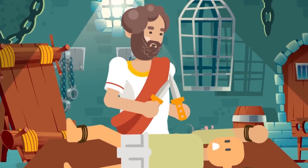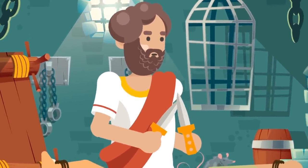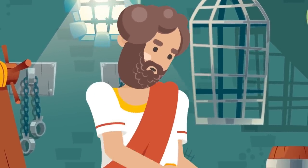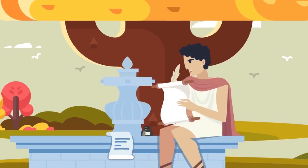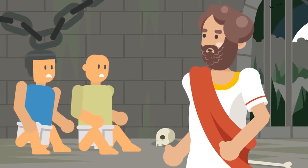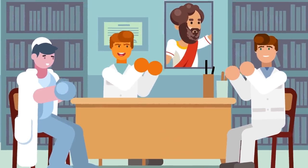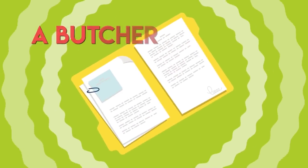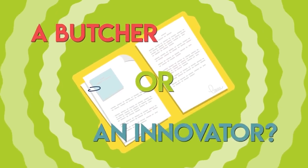But he also performed what are called live vivisections, which basically means opening up a person while they're well and truly aware of it. A Greek encyclopedist known as Celsus wrote in a second century medical book that Hierophilus used around 600 live prisoners for his research. His work was groundbreaking as we said, and he was a gift to medical science, but as one scientific paper asks, was he a butcher or an innovator?